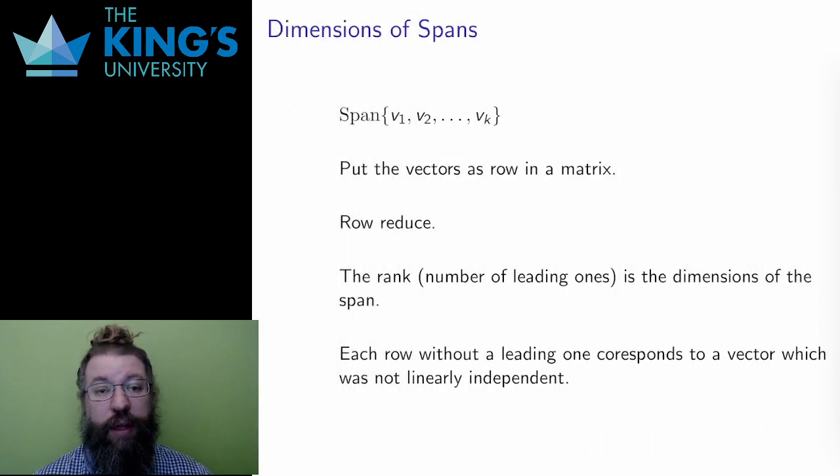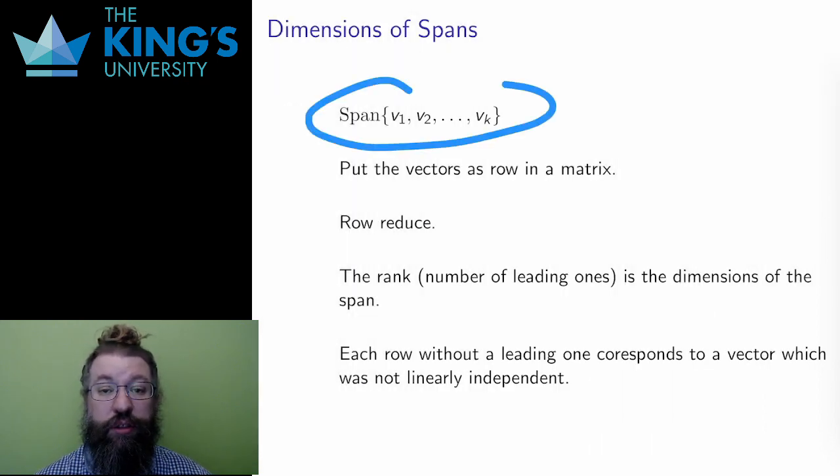Say you have a span of some number of vectors. A span is all possible linear combinations of the vectors. Everything you can get to from the origin by taking any multiples of the vectors v1 up to vk and then adding them all together. What I want to know in this video, what is the dimension of this span? Spans are built up from nothing. By adding directions, I give more and more possibilities, and thus the span can grow in dimension.